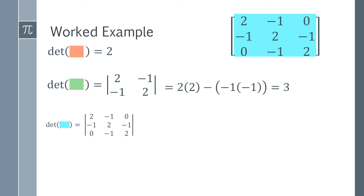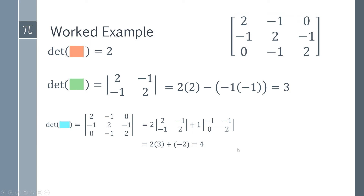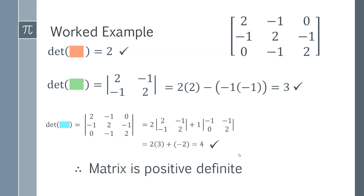Next, find the determinant of the whole three-by-three matrix. Because there's a zero in the matrix, you only have two terms to worry about: two times the determinant of one part, plus one times the determinant of another part — the next term is zero so it's ignored. This evaluates to four. Working back through all the determinants: two is greater than zero, three is greater than zero, and four is greater than zero. Therefore Sylvester's criterion is satisfied, and the matrix is positive definite.